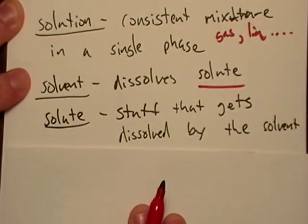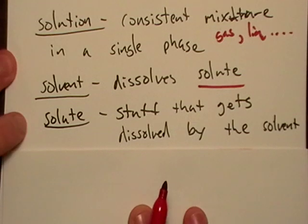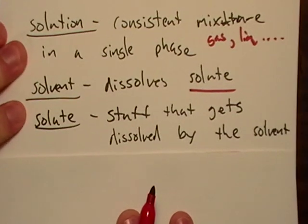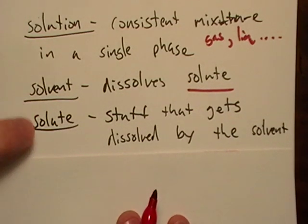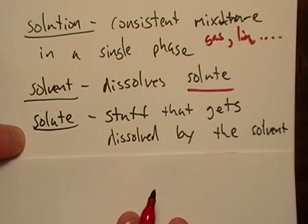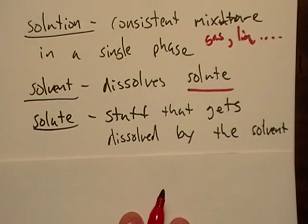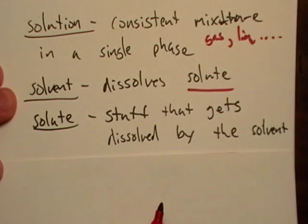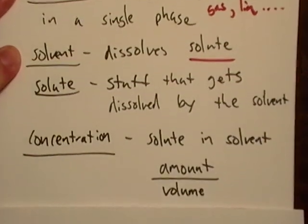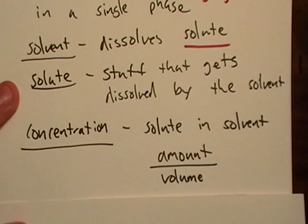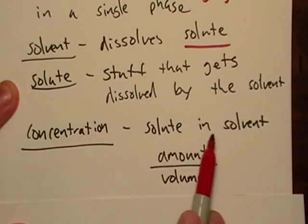Then next, solute. Well, that's just the stuff that gets dissolved by the solvent. So nothing too big there. So we need a way of expressing how much solute is in a solvent. Like say we have an acid solution. How strong is it? How much acid did I pour into the water or how much water did I pour into the acid to dilute it or to make it strong or whatnot. So we call that concentration. And that's just how much solute is in a solvent.